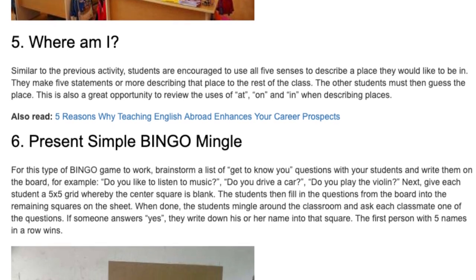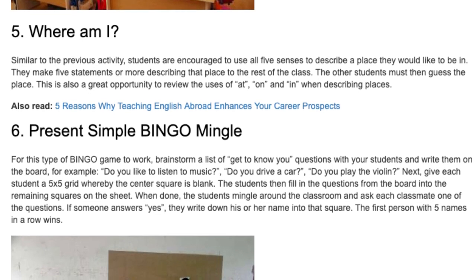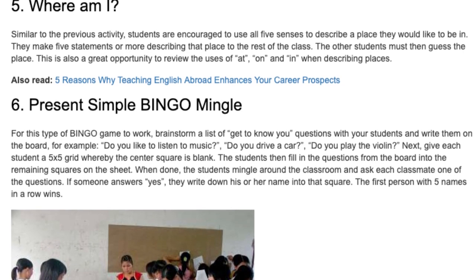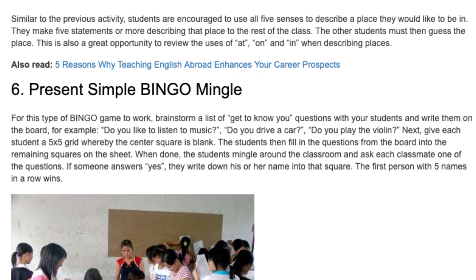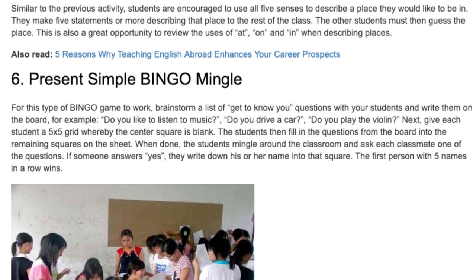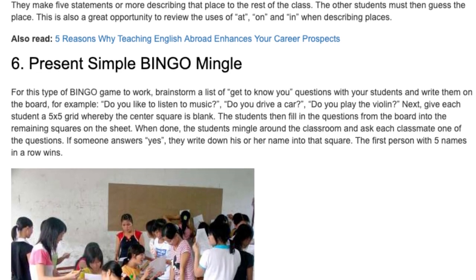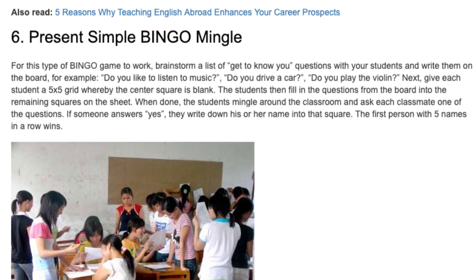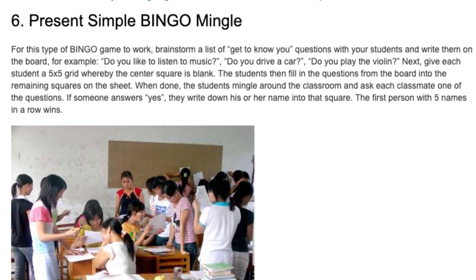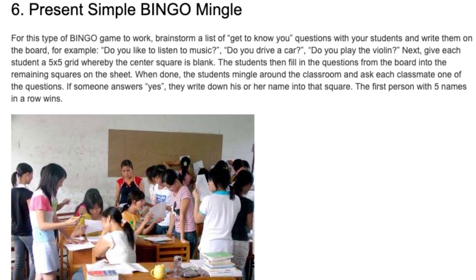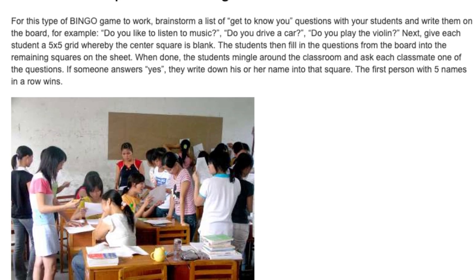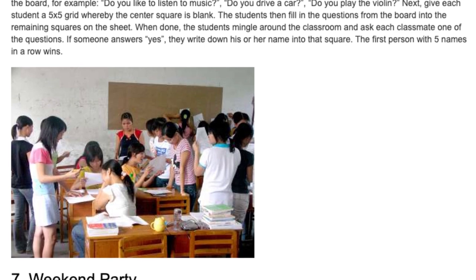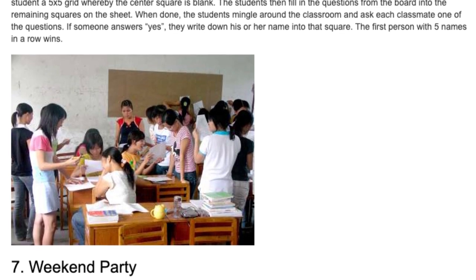Activity 6: Present Simple Bingo Mingle. For this bingo game to work, brainstorm a list of get-to-know-you questions with your students and write them on the board — for example, 'Do you like to listen to music?', 'Do you drive a car?', 'Do you play the violin?' Give each student a 5x5 grid whereby the center square is blank. Students fill in the questions from the board into the remaining squares, then mingle around the classroom asking each classmate one question. If someone answers yes, they write down that person's name in that square. The first person with five names in a row wins.